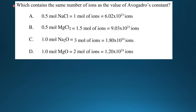Our next example involves ions. Which contains the same number of ions as Avogadro's constant, which is 6.02 times 10 to the 23? Option A: 0.5 moles of sodium chloride. Sodium chloride is composed of Na+ and Cl- ions, so we multiply 0.5 by 2 to give 1 mole of ions, equaling 6.02 times 10 to the 23 ions — that is the correct answer. Option B: 0.5 moles of magnesium chloride, composed of 1 Mg2+ ion and 2 Cl- ions, so 0.5 times 3 gives 1.5 moles of ions, equaling 9.03 times 10 to the 23 ions.